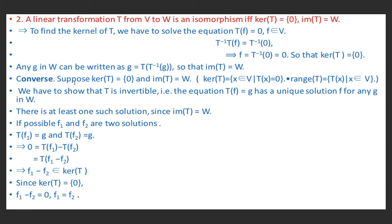Now the converse: suppose ker(T) = {0} and im(T) = W. We will show T is an isomorphism. It is already given to be linear, so we need only prove T is one-one and onto. For this we show T is invertible, since T is invertible if and only if it is one-one and onto.